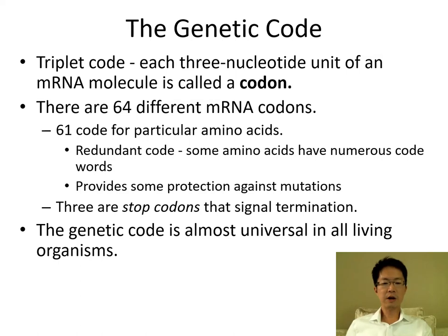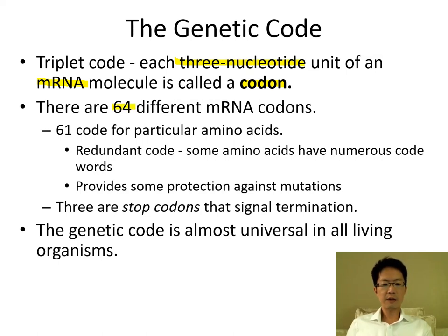We first talk about a codon. A codon is a three-nucleotide sequence that we find on an mRNA molecule. Since there are three nucleotides as one codon, there will be 64 different mRNA codons. We have four bases, and the four bases are arranged in triplets.